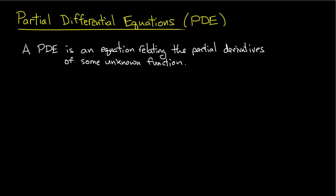Often times the goal when we study PDEs is to learn something about this unknown function. This unknown function we call a solution. The solution is often something we want to find an explicit formula for, or sometimes it's something we just want to know some properties of.